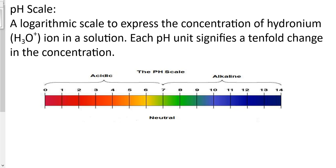The pH scale is a logarithmic scale used to express the concentration of hydronium ions in a solution. Each pH scale unit signifies a tenfold change in the concentration, and that is something important that we need to understand based on today's lesson. Each pH unit signifies a tenfold change in the concentration.